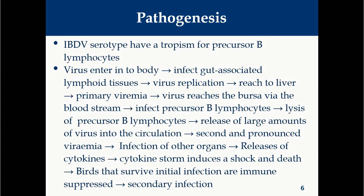Now we will see about pathogenesis. IBD virus serotypes have a tropism for precursor B lymphocytes, which are actively dividing cells containing surface immunoglobulin M on their surface. In chickens, the Bursa of Fabricius is at its maximum development between three to six weeks of age, having the highest number of precursor B lymphocytes, which is the reason why IBD virus mainly targets the bursa during these weeks.